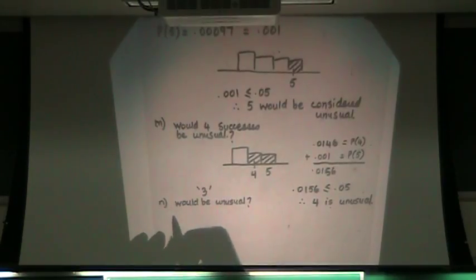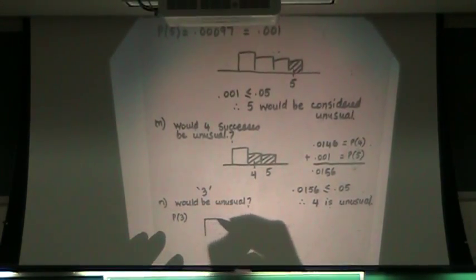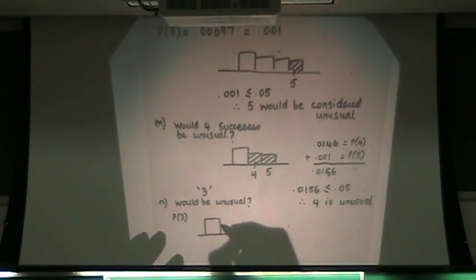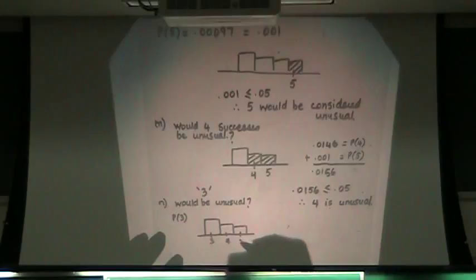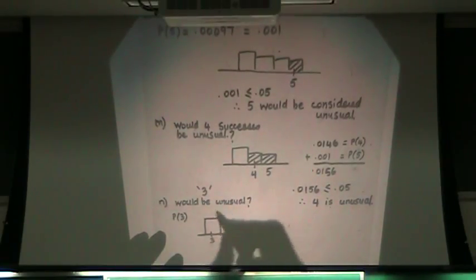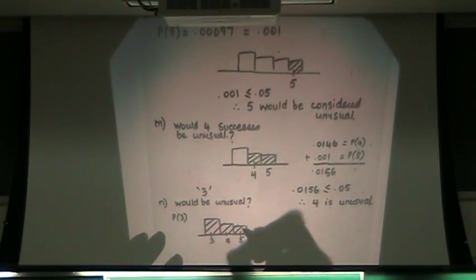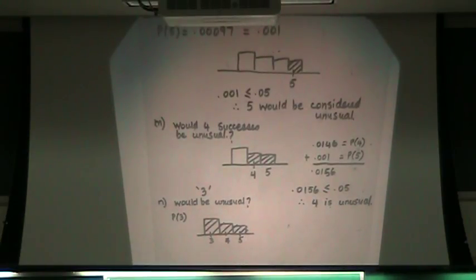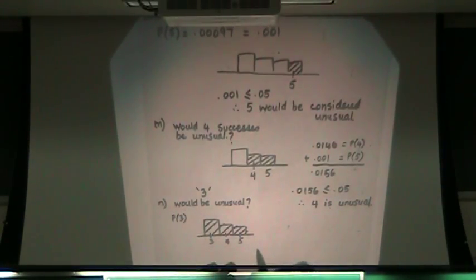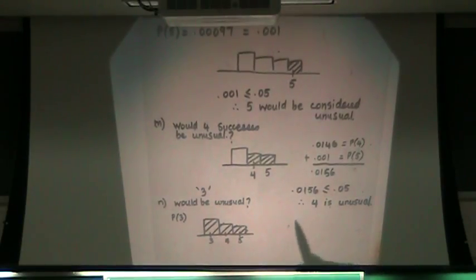I'm going to take probability of three. Let's draw a picture so it makes it very clear: three, four, and five, because I have to take three and everything above three. It's like p-value. I'm finding p-value here. So I'm going to take three and four and five and add them.